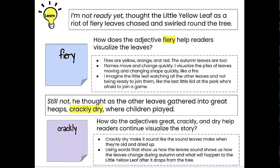Let's look at our next adjective. Here's another sentence from our story: 'Still not,' he thought, 'as the other leaves gathered into great heaps, crackly dry where children played.' How do the adjectives great, crackly, and dry help readers continue to visualize the story? I picture fire-colored leaves swirling about, and now I'm reading about leaves gathered into great heaps or big piles, crackly dry. Crackly and dry make it sound like the sound leaves make when they're old and dried up — like in fall when you step on leaves and they make that crackly sound. Using words that show how the leaves sound tells us how the leaves change during autumn and what will happen to the little yellow leaf after it drops from the tree.